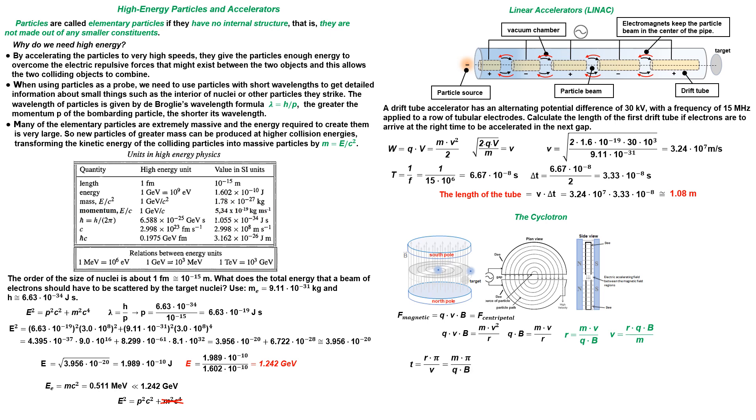Therefore, from these equations we can see that the time to travel around a dee is constant for a constant magnetic field intensity, and that the time is independent of the velocity and radius.